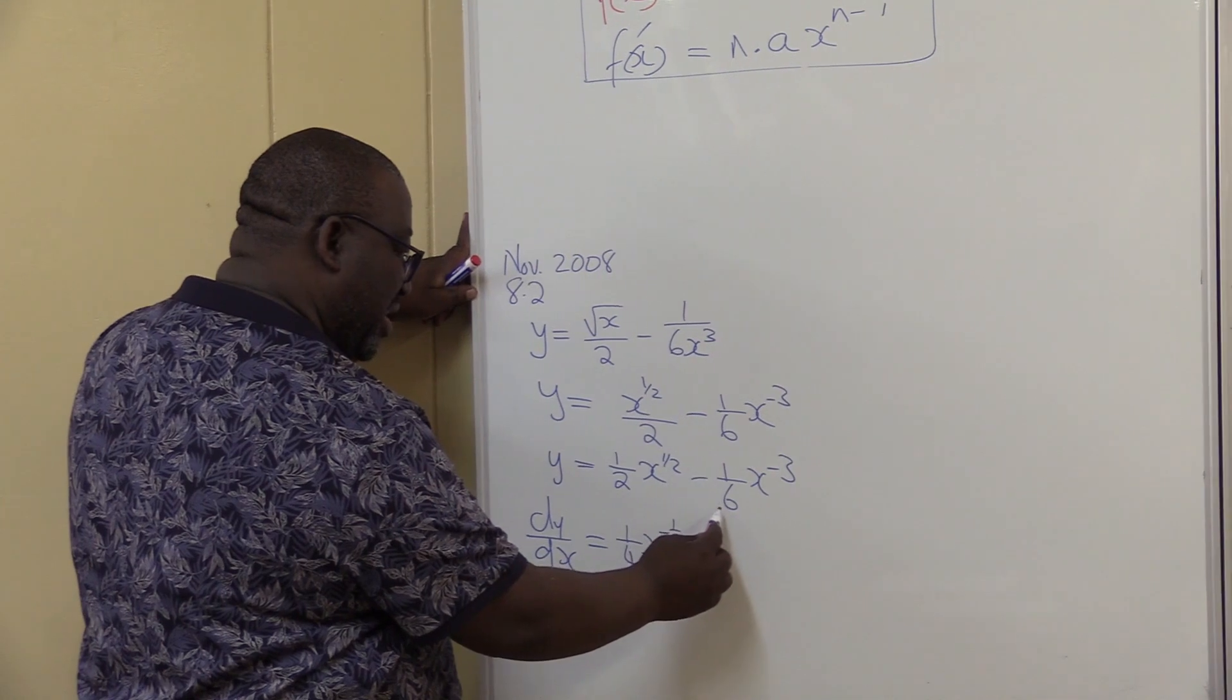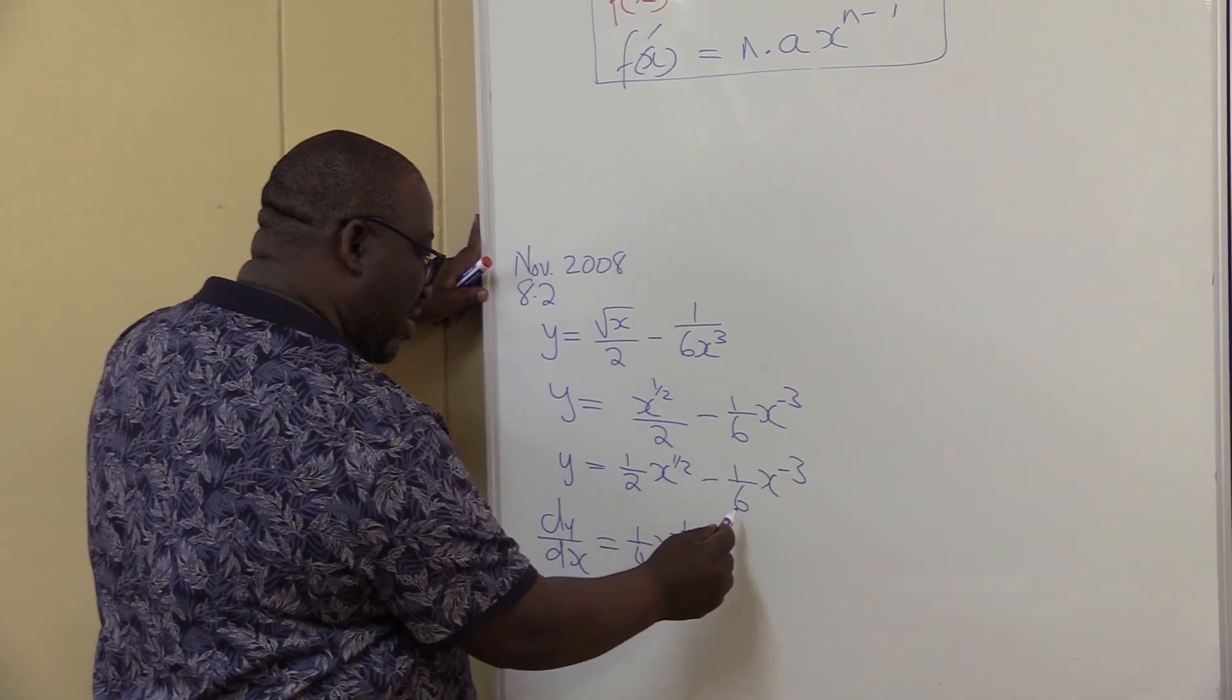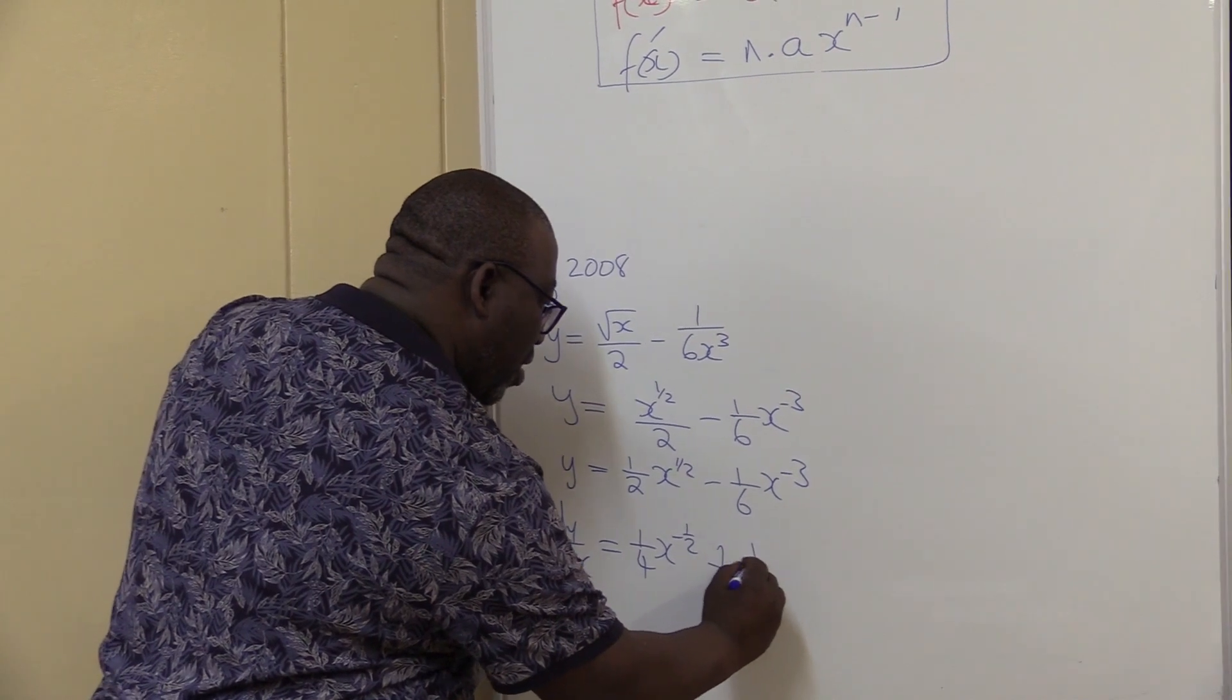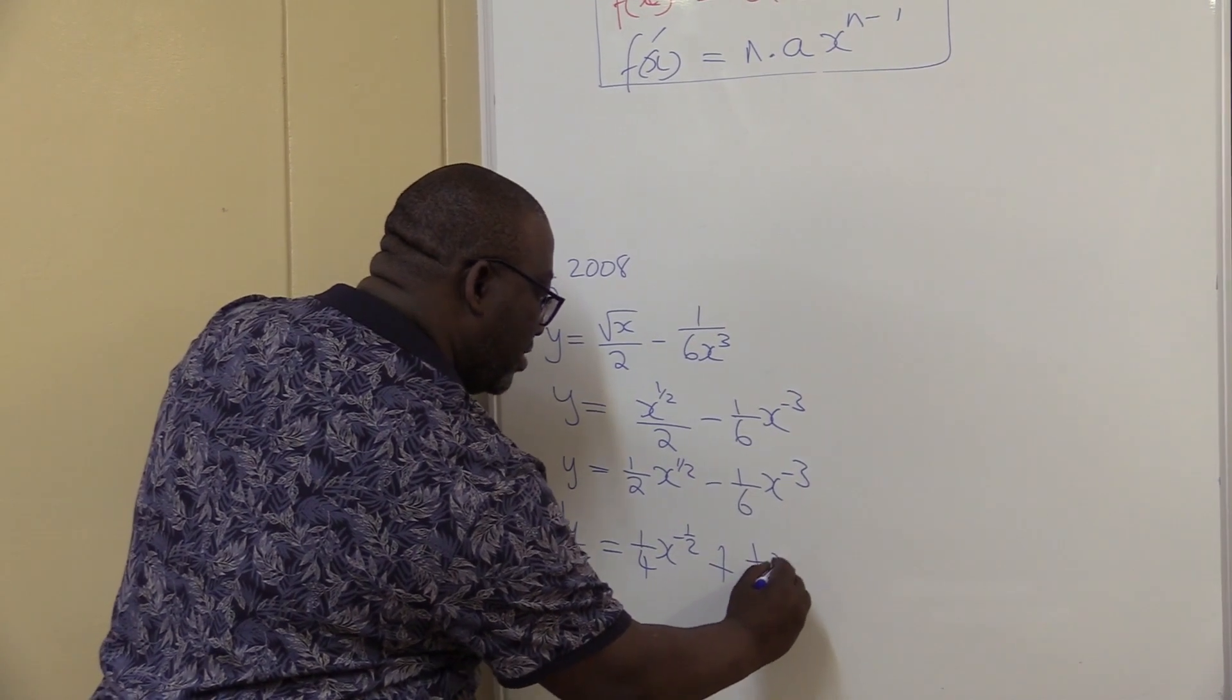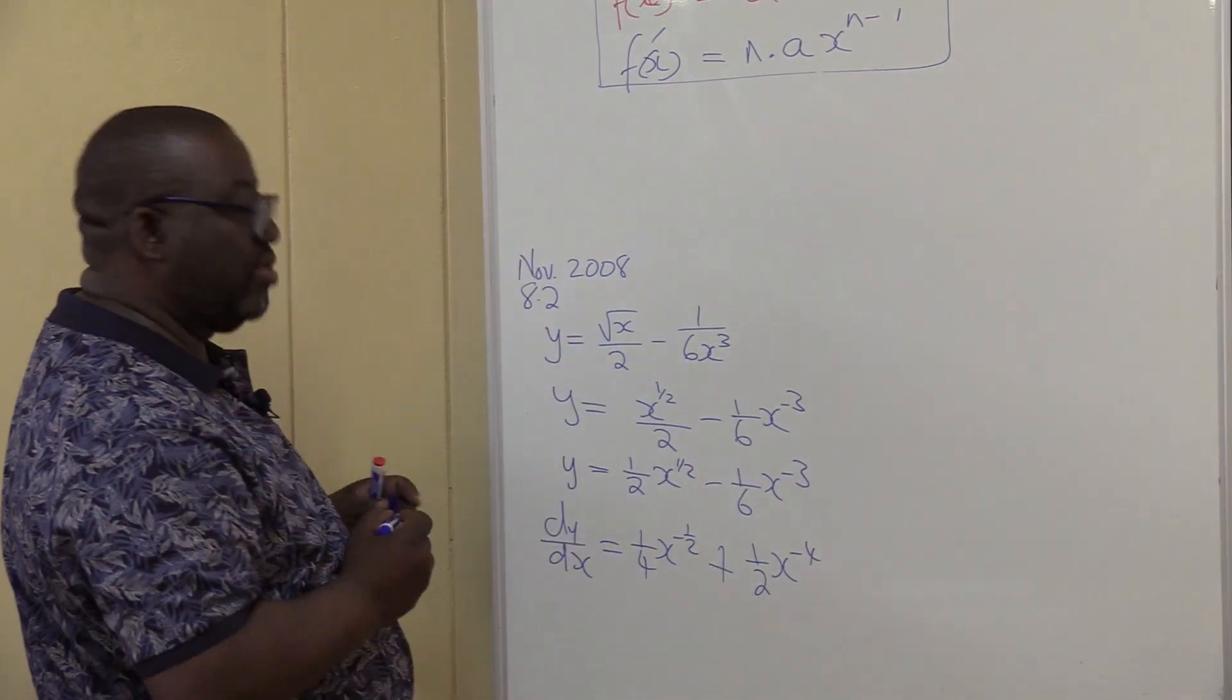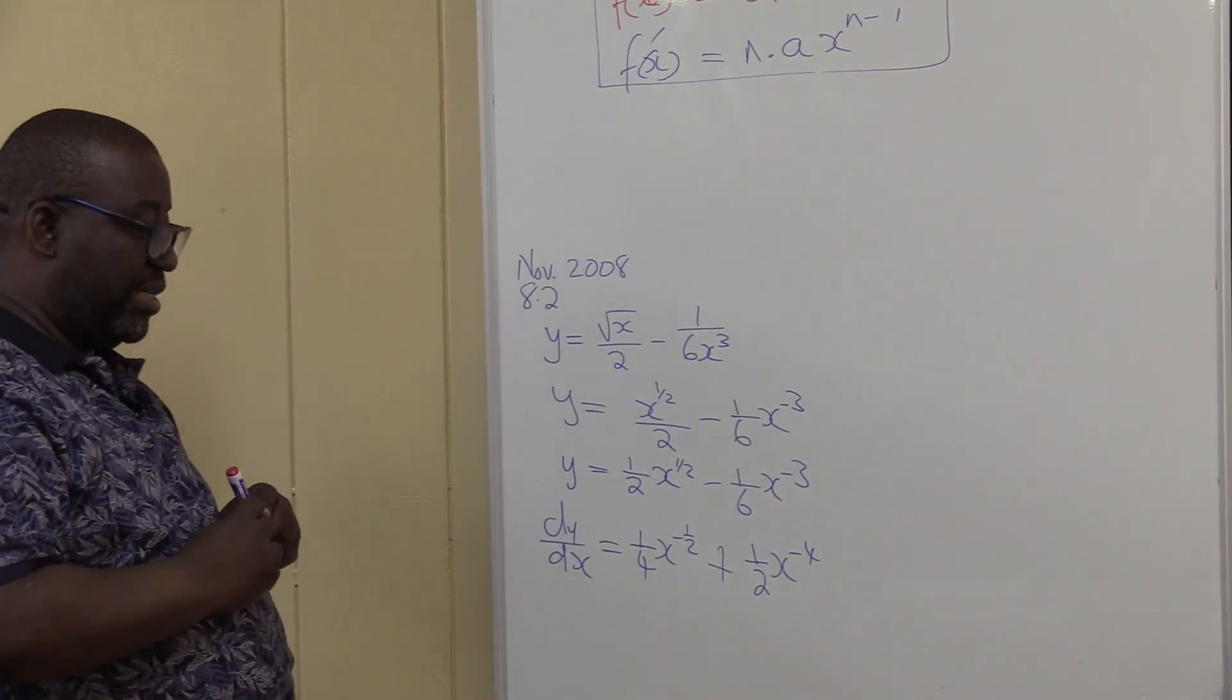Take this, multiply it this side. It's going to be plus 3, there's 3, there's 6. This is 1 over 2 now, so it's going to be 1 over 2, x to the power minus 4. That's what we have. This is our derivative.